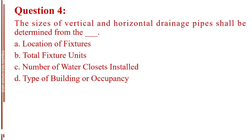Question number four. The sizes of vertical and horizontal drainage pipes shall be determined from the blank. A. Location of fixtures. B. Total fixture units. C. Number of water closets installed. D. Type of building or occupancy. The answer is Letter B, total fixture units.